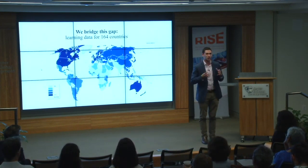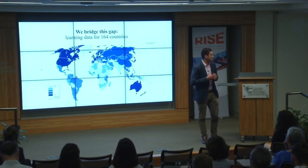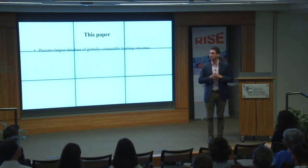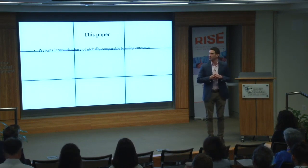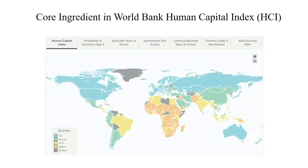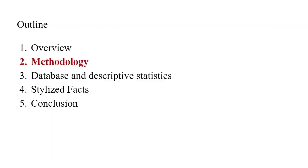In this paper we aim to bridge this gap by putting learning outcomes on a global scale, covering 164 countries from 2000 to 2017 — filling out many more countries. We're presenting one of the largest globally comparable learning outcomes databases, with very current data up to 2017. We also share stylized facts showing how you might use this database. The goal is largely to produce a public good. This database is part of the Human Capital Index that the World Bank recently launched, with harmonized learning outcomes as one of its components.